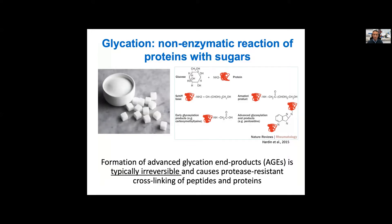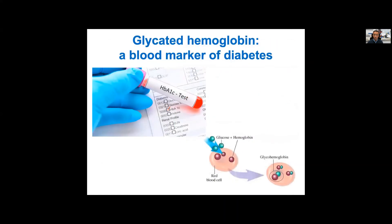Glycation is a non-enzymatic reaction of proteins with sugars, and this is different from glycosylation — the modifications that happen along the secretory pathway in the ER and then in the Golgi to target proteins for the extracellular space or for the membrane. Glycation is non-enzymatic and usually leads to the formation of advanced glycation end products or AGEs that are typically irreversible. This series of complex reactions ends up damaging proteins, and we know glycation takes place in diabetes — we actually use glycated hemoglobin as a marker for diabetes.